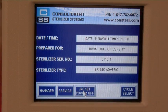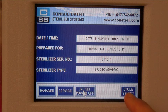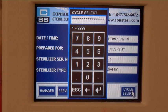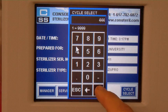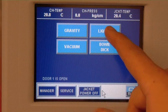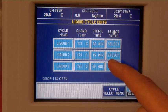On the touchscreen, turn on jacket power. Press select cycle and enter 444 as the user ID. Select autoclave cycle for 45 minutes at 121 degrees Celsius.